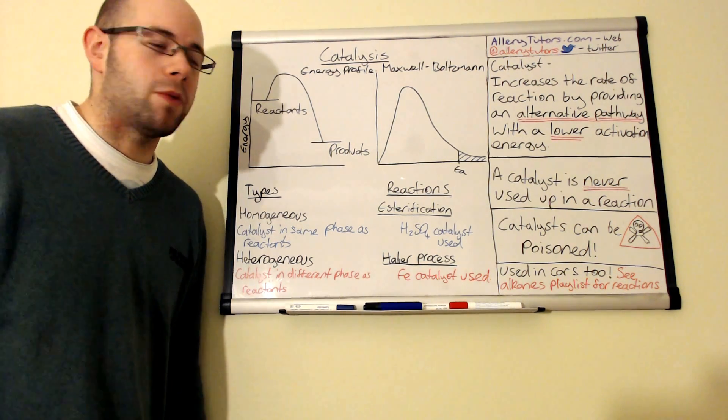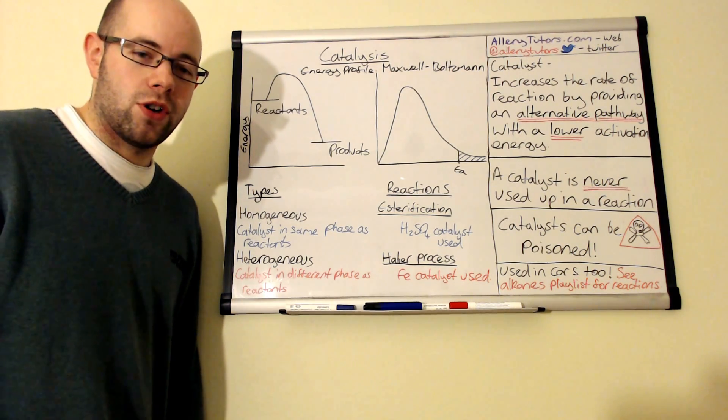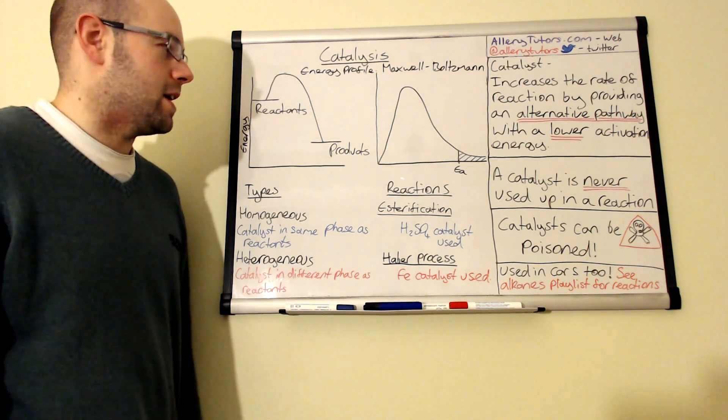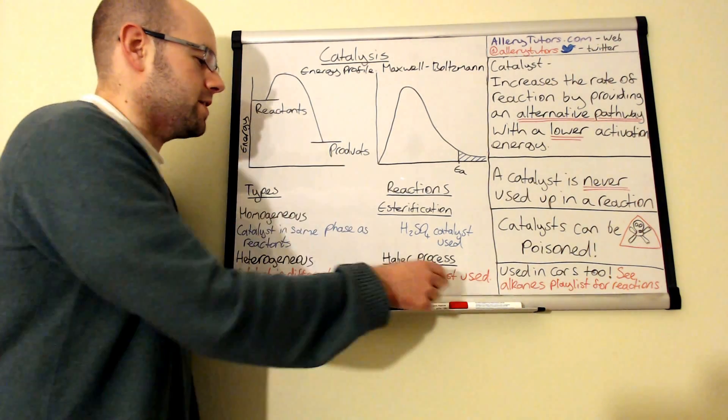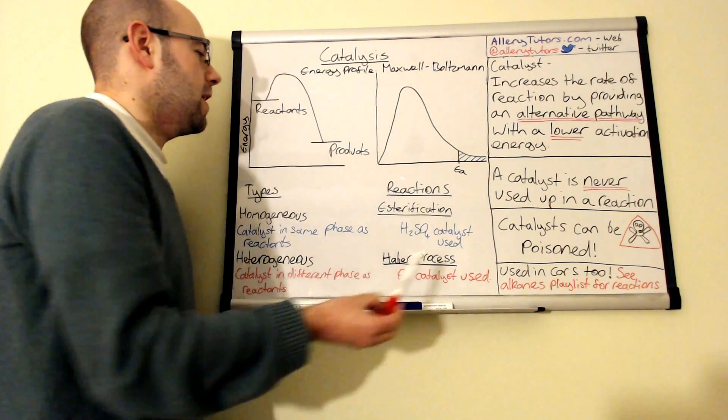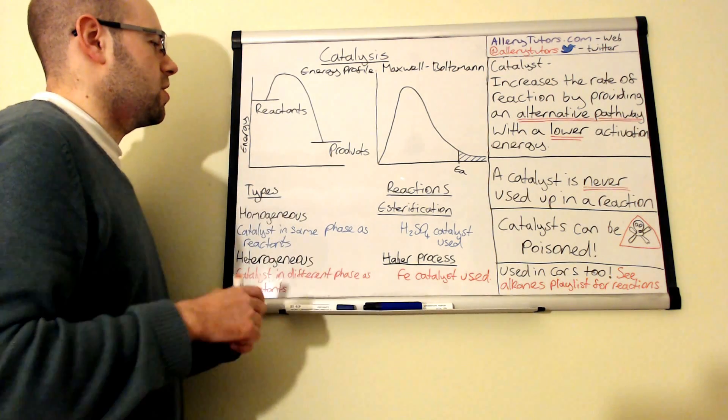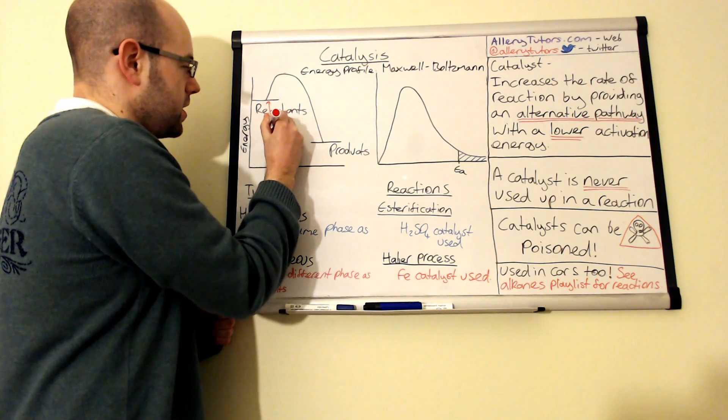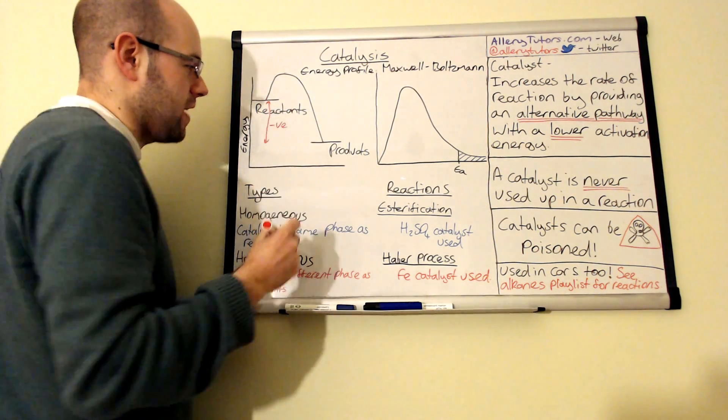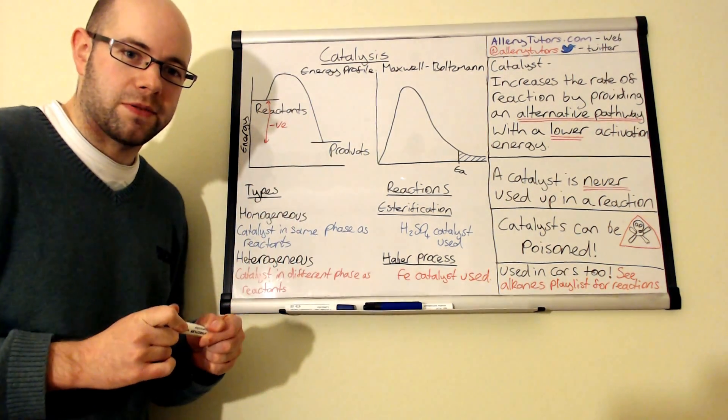We're going to look at one of the energy profiles here to show you what difference a catalyst can make. We've got a reaction here. This reaction, as you can see, is an exothermic reaction—the products are lower in energy than our reactants. If I draw it down there, you can see that this is actually a negative enthalpy change, so we know this is exothermic.